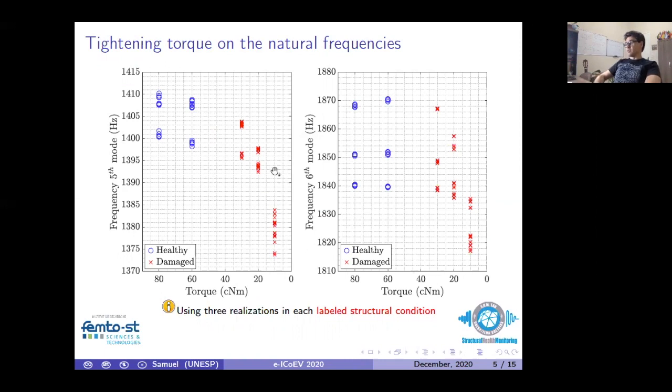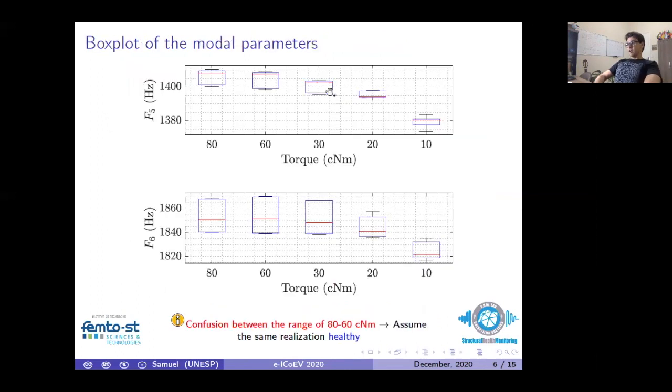This is true when we analyze the variation of this natural frequency compared with fluctuation of the torque. We assume that the torque in these two conditions, in the 80 and 60 centi-Newton meter, corresponds to the healthy condition, and the others are the data in the damaged situation. The box plot of the modal parameters confirmed this challenge to classify the state using only the natural frequency. A confusion is observed in the initial range of the tightening torque, so it is really difficult to detect some structural change, observing only these two natural frequencies separately.